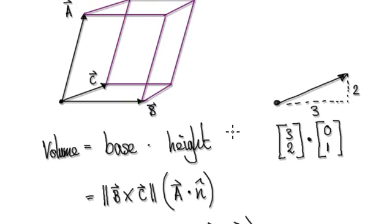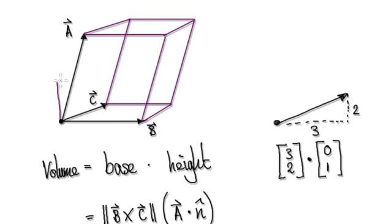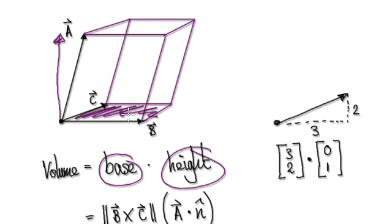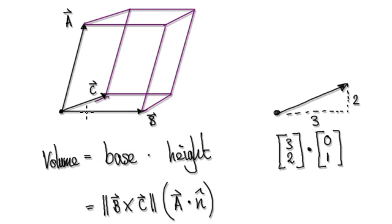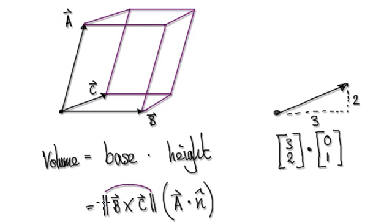So the volume would be us getting the area of the parallelogram — that's the base — times the vertical height. Remember, the vertical height would be from the floor all the way to the ceiling, which is the same as this distance here. So the area of the base would be us getting b cross c, which gives us this vector here. The magnitude of this vector represents the area of the parallelogram.